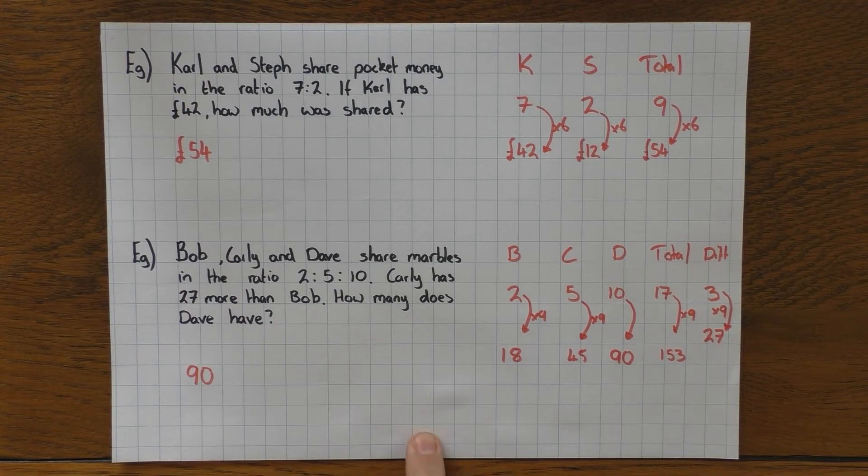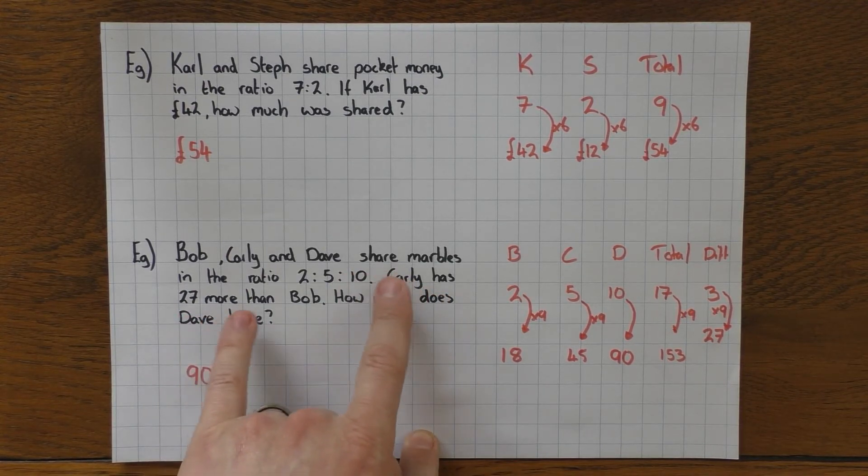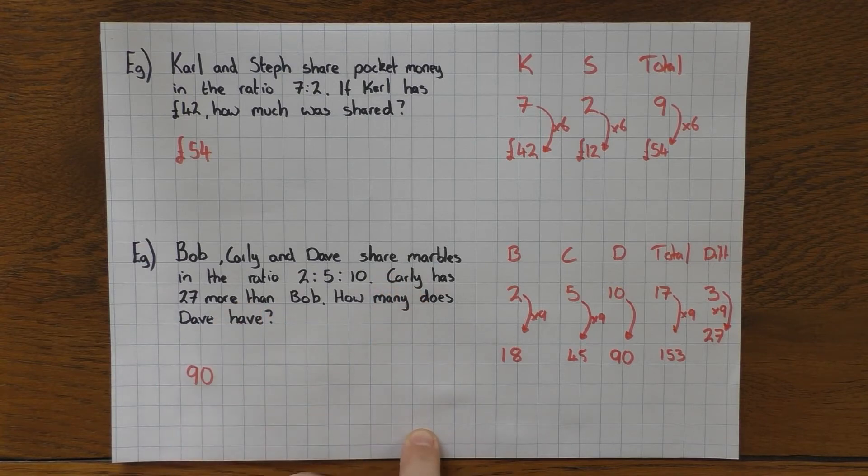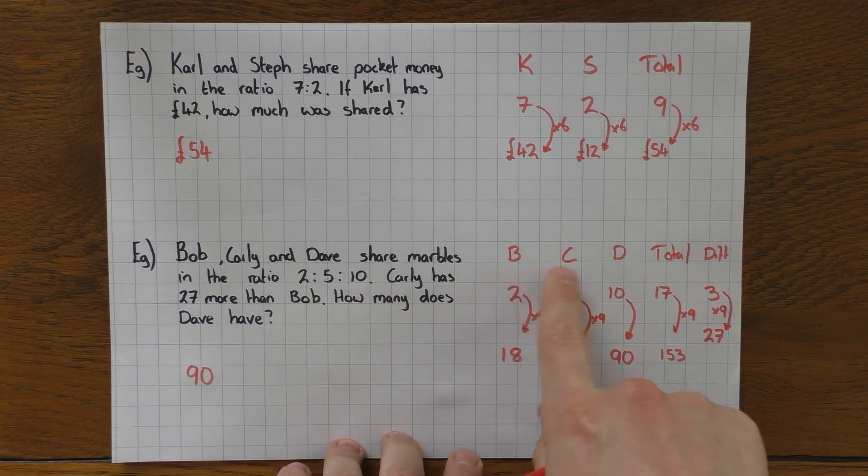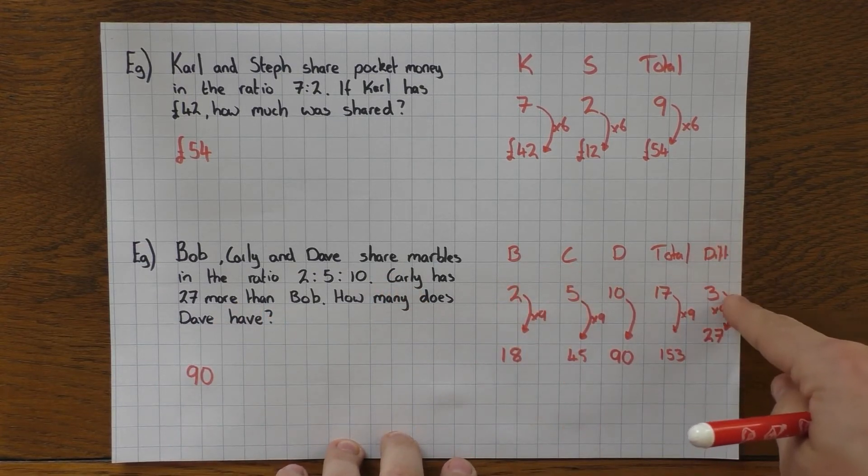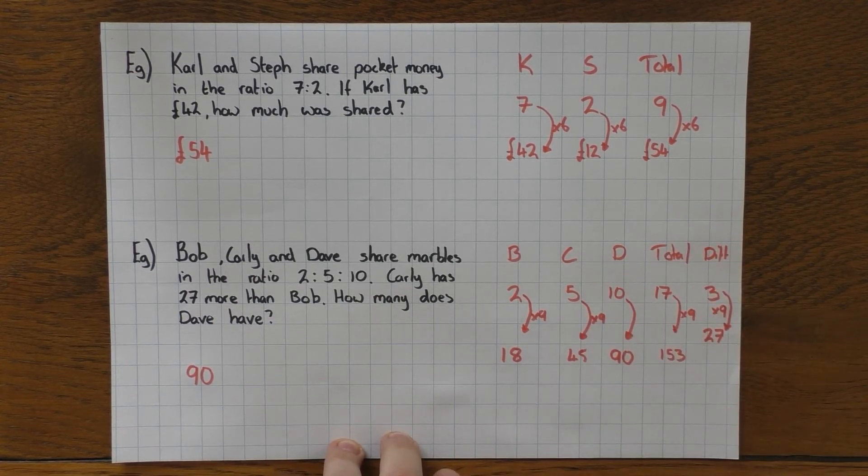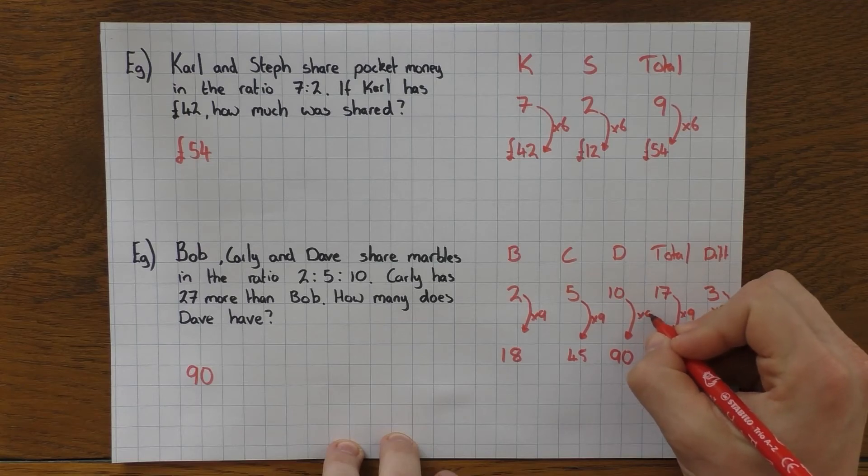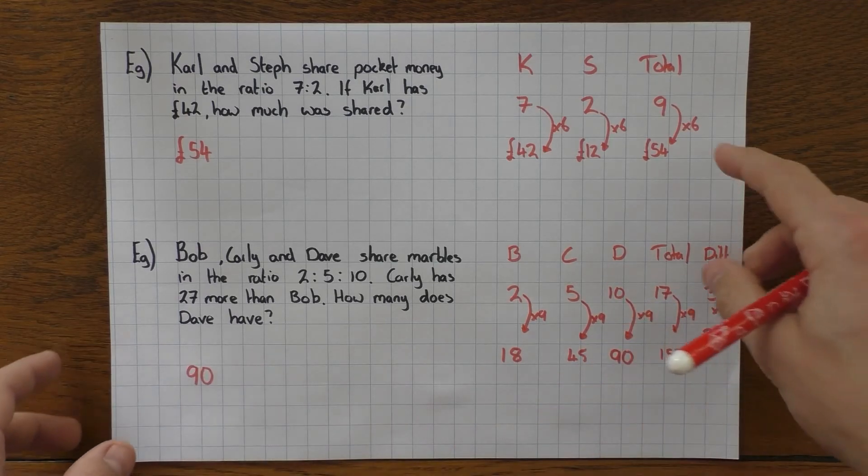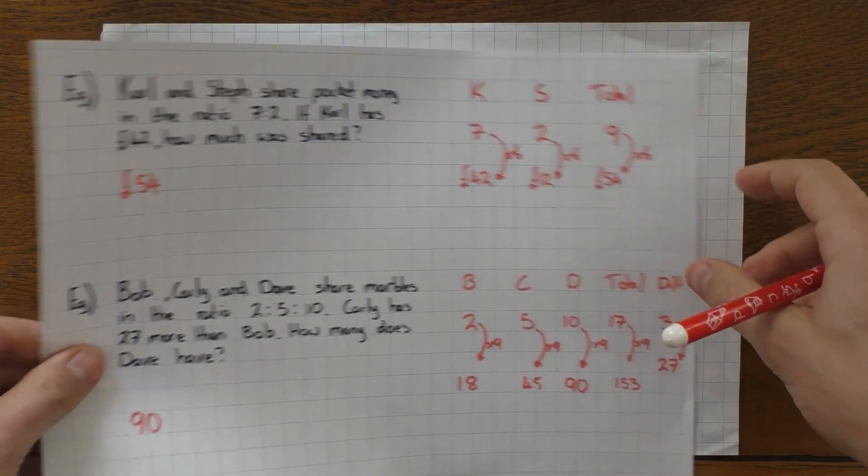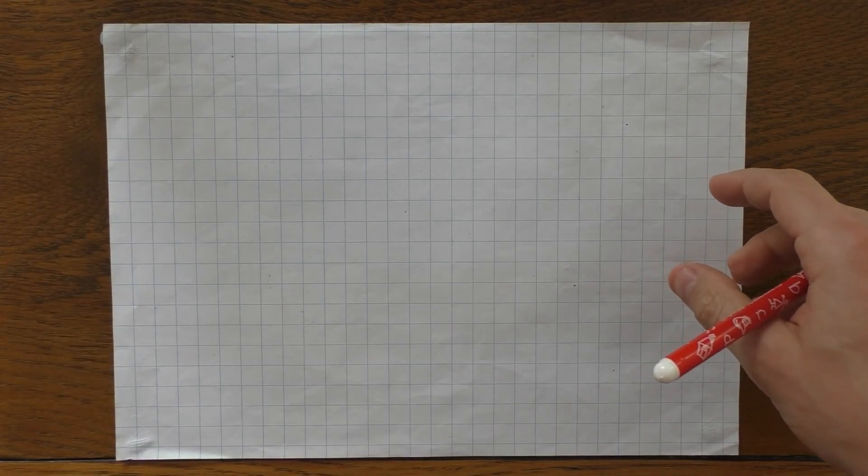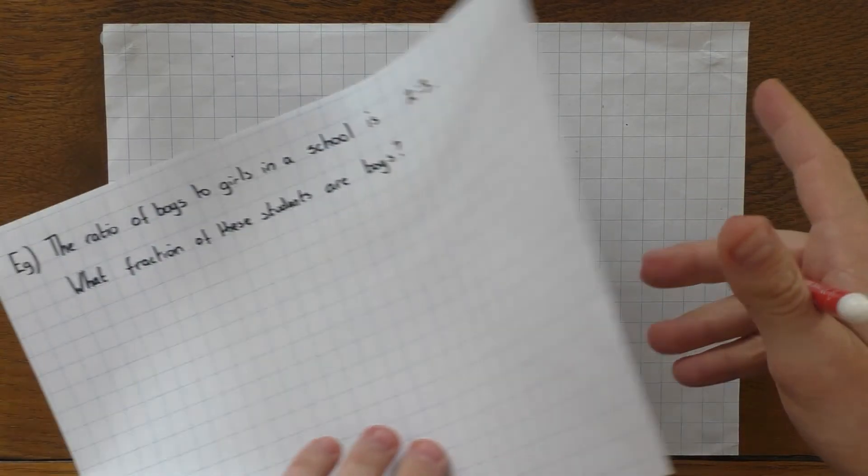And then it says how much did Dave have? Well, there's Dave—he gets 90. So it's just a slightly different one here that sometimes they throw in as a curveball. But if it's talking about the difference between two people or two things, that's absolutely fine. Just have a look at the difference here, add a column on, fill it in, work out what you've got to do, and it's the same.